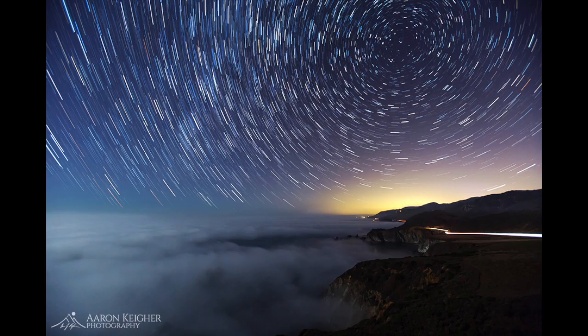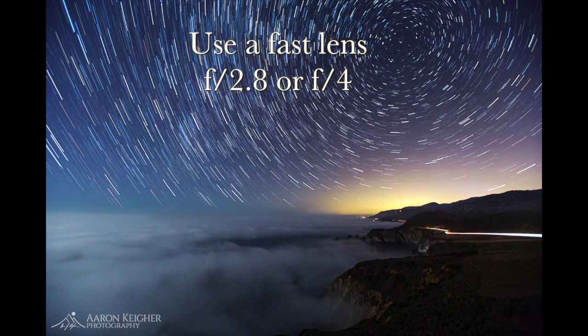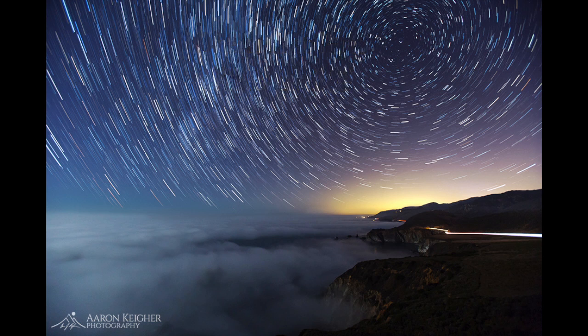First let's talk about the settings we're going to have on our camera. One of the most important things when shooting any astro shot is that you have a relatively fast lens. When you're shooting for deep space colors, for instance if you're shooting the Milky Way, it's really important that you're shooting somewhere around f2.8 on your aperture setting. But for star trails, you can have a slightly slower lens and it will still work out. f4 is fine — even f5.6 would work out just fine.